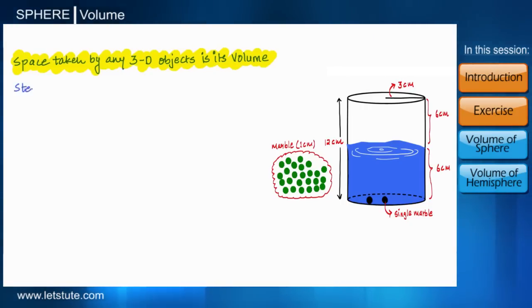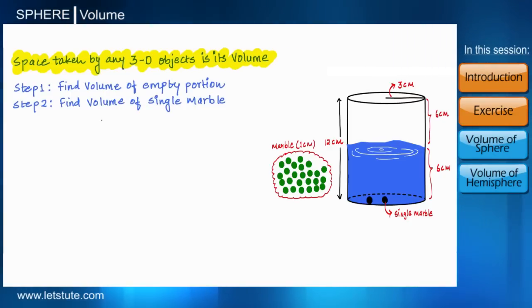So let's cross check whether it is really 40 marbles or not. So first of all we will calculate the volume of empty portion of the glass, followed by the volume of a single marble, and then we will divide the volume of empty portion of the glass by the volume of a single marble. That will give us the number of marbles required.